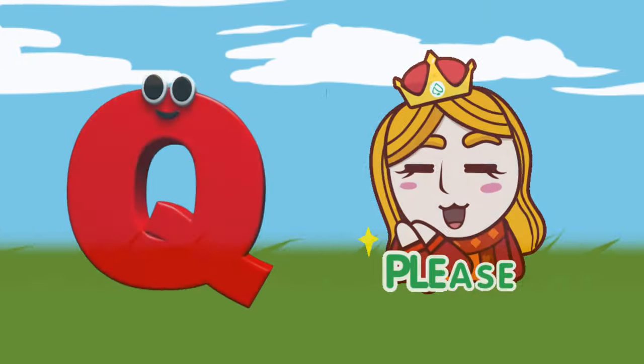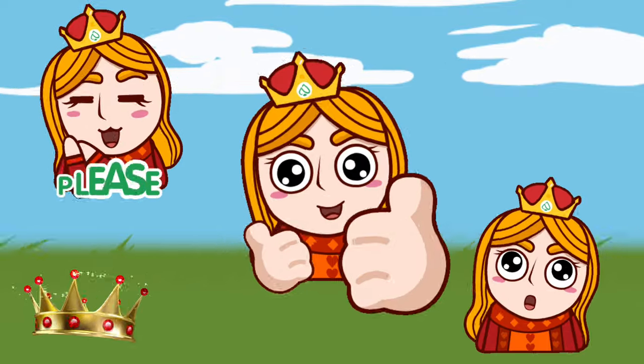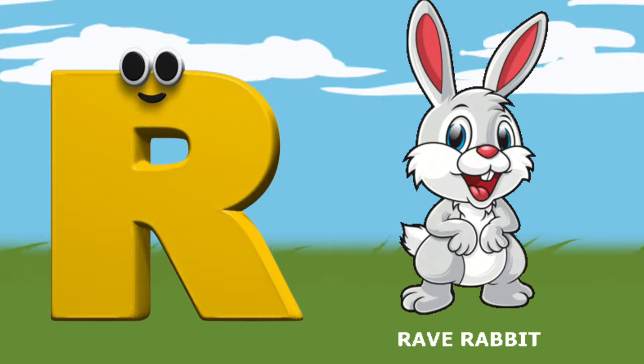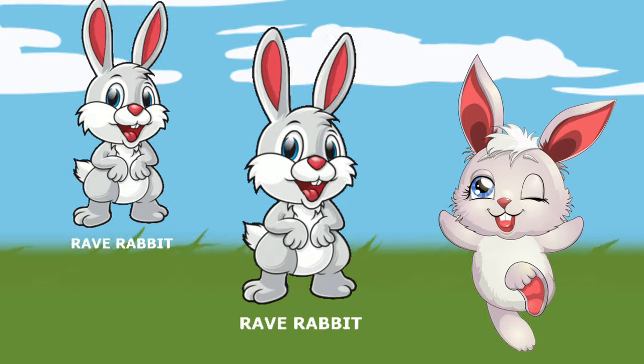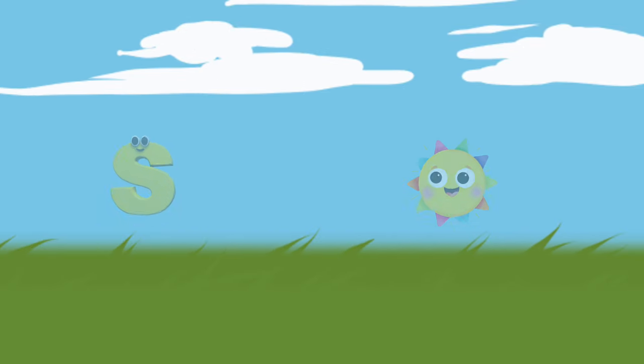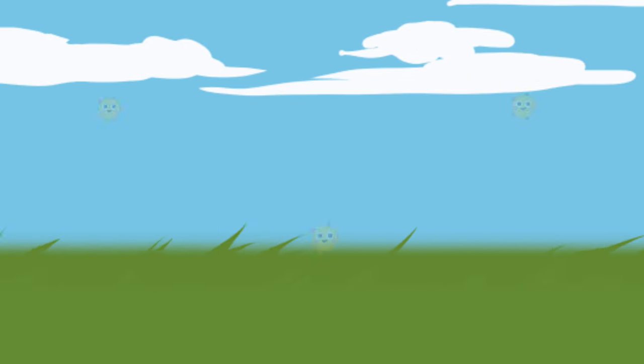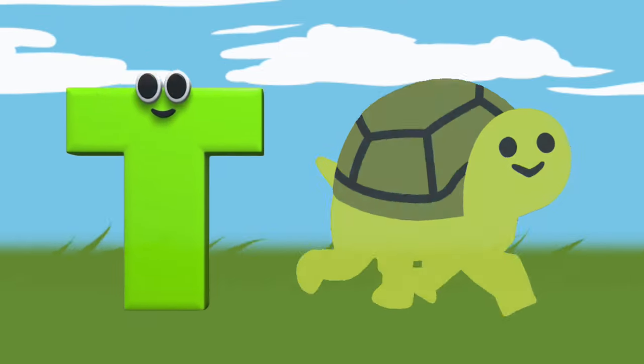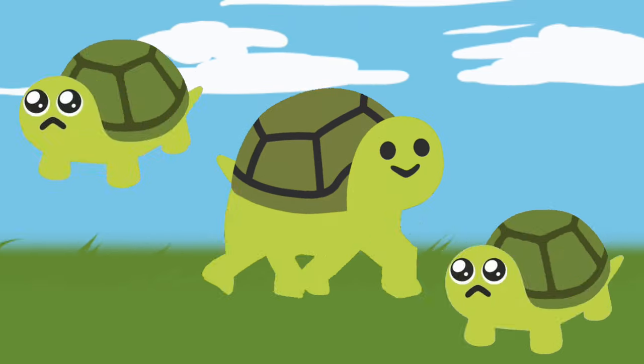Q is for Queen, qu-qu-queen. R is for Rabbit, r-r-rabbit. S is for Sun, s-s-sun. T is for Toad, t-t-toad.